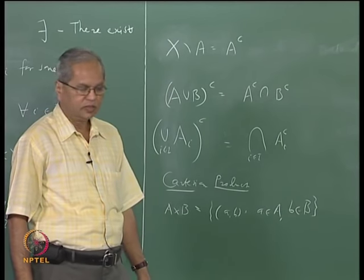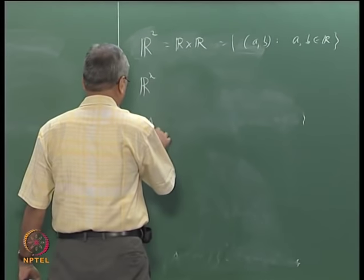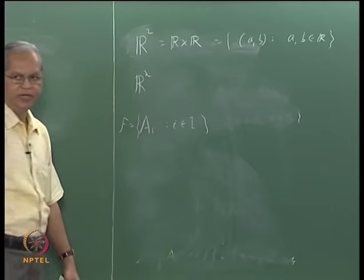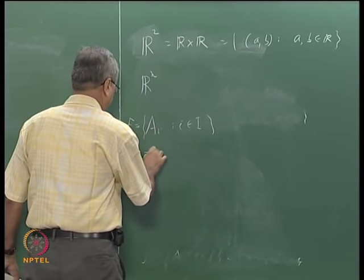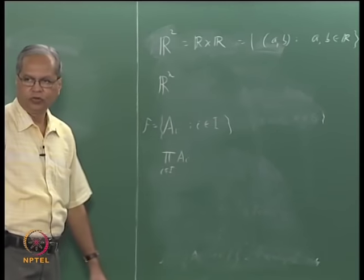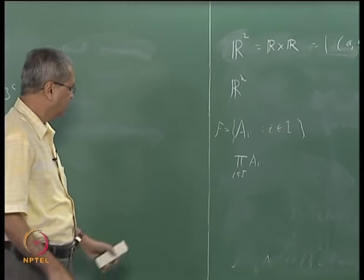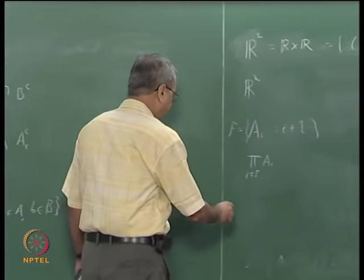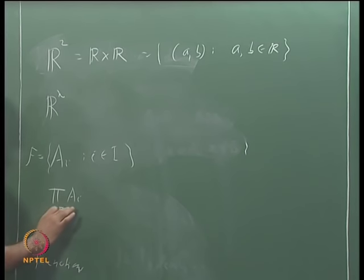Suppose you are given a family {Aᵢ : i∈ℐ} and want to define Π{Aᵢ : i∈ℐ}, the Cartesian product of all sets in this family. This is a very non-trivial question. To define it, we need another concept from set theory, namely functions. There is no simple way of defining this in terms of ordered pairs or triples, because this is an infinite family in general.